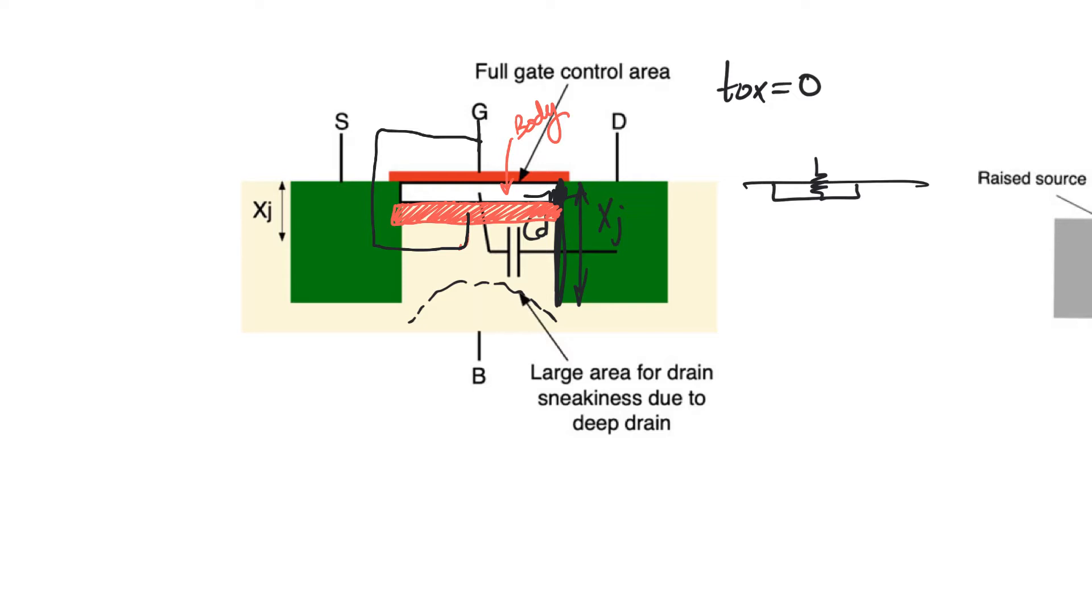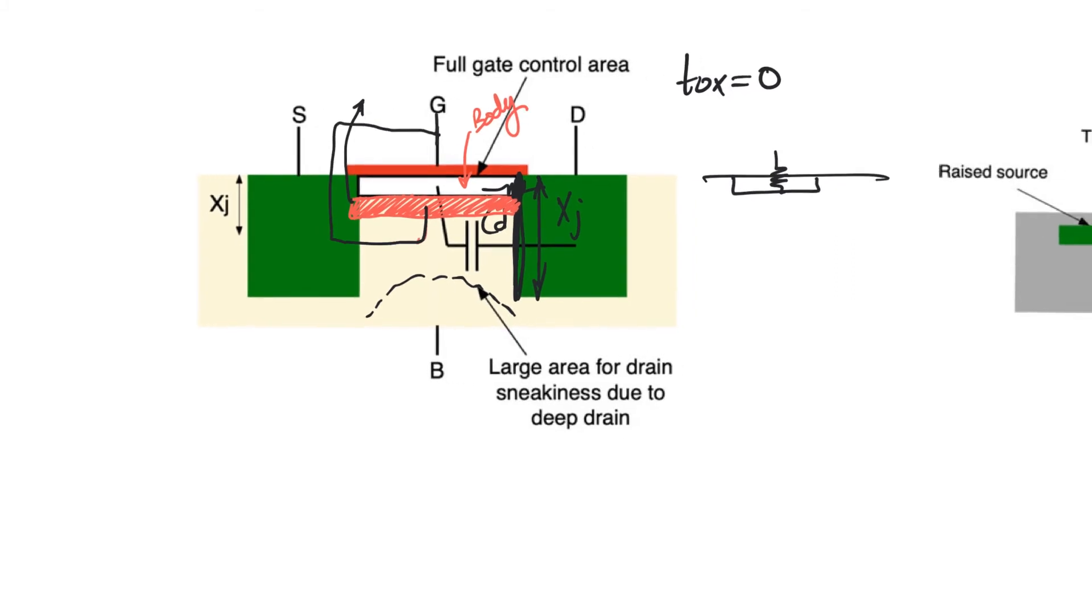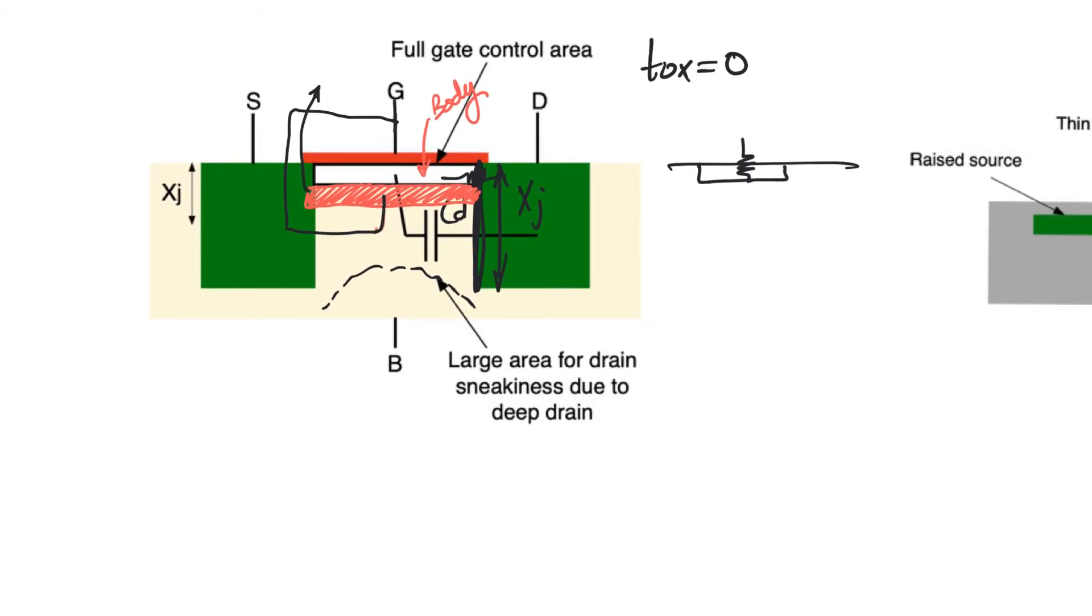The problem with the buried gate approach—it's really nice because it totally solves this problem—but the problem is how would you actually manage to contact it? Like how would you guarantee that it has the same potential as the gate? Technologically that's impossible. We cannot create a metal wire that digs deep and contacts the buried gate from the bottom. That's not going to happen. So it's a good theoretical idea and it provides the basis for a lot of structures that help us fight DIBL but it's not a practical implementation.